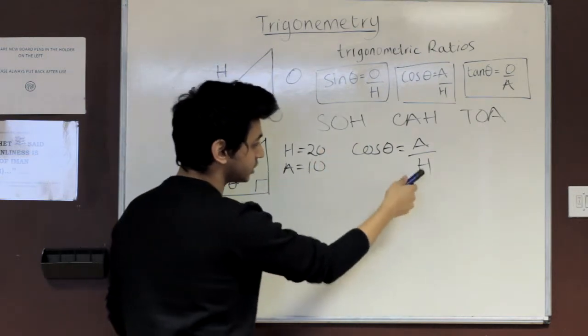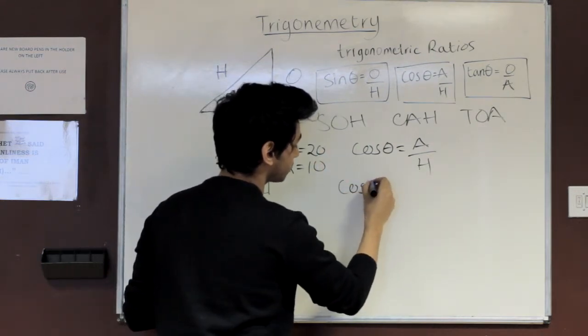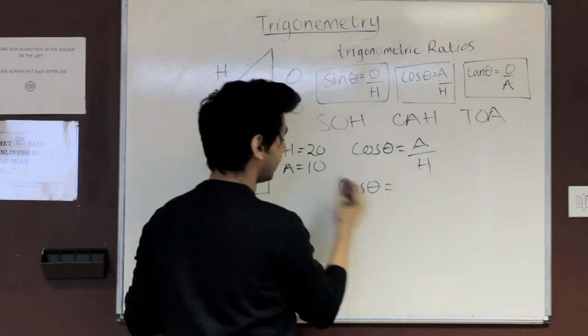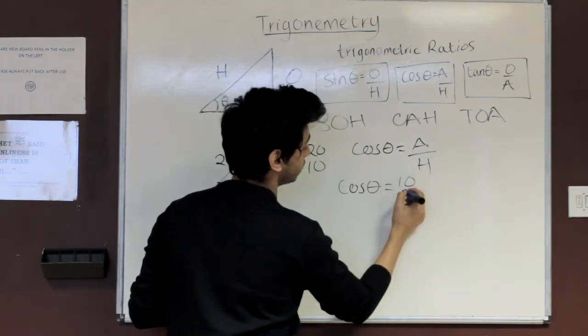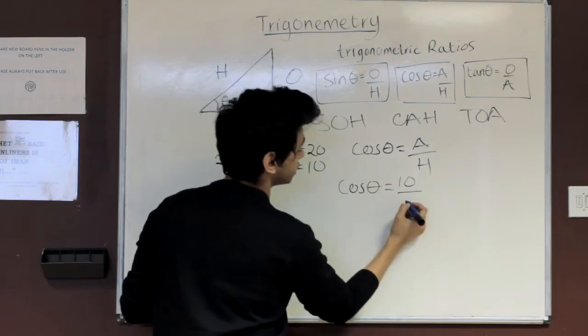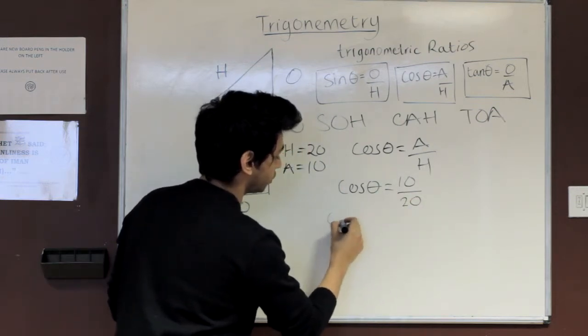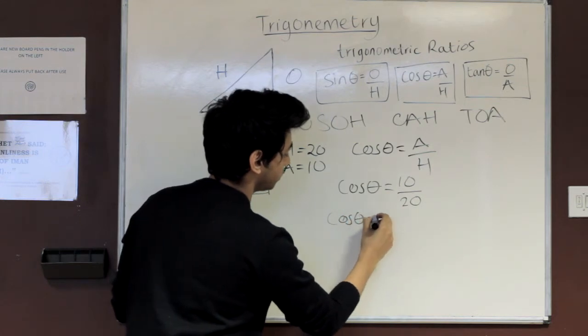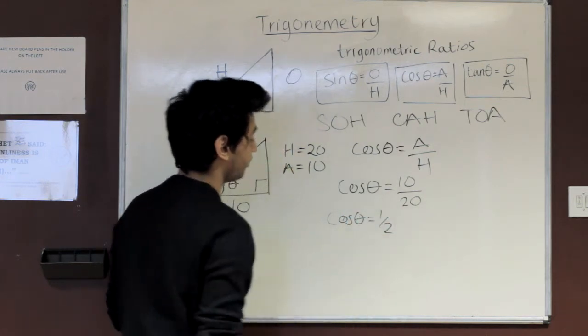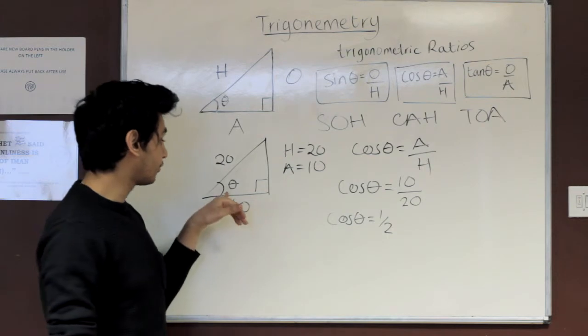So in that case you're going to put this ratio up: cos theta equals A over H. So if we substitute our values into this, we've got cos theta equals A is 10 over here, so 10 over, and H is 20. So we can rewrite this as cos theta equals a half. And remember the question asked us to find out what theta is.